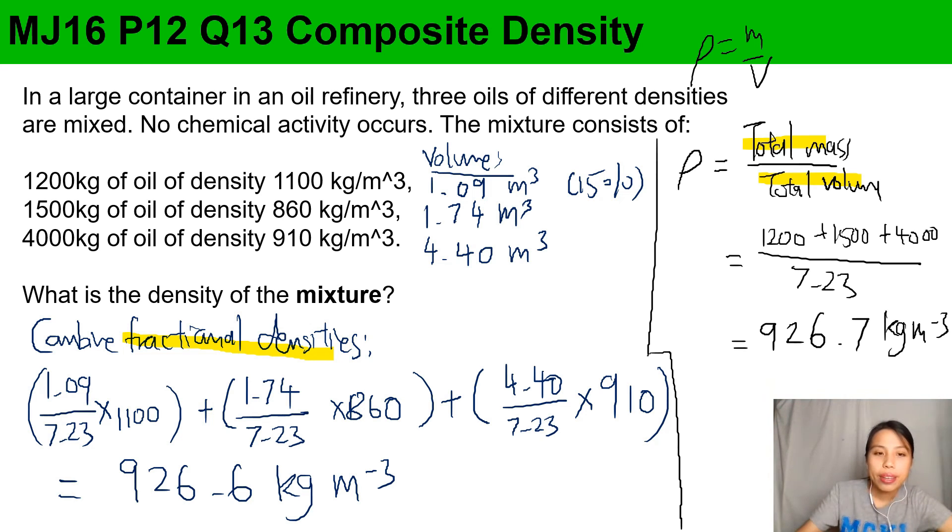Just a quick note: the first one is about 15 percent. The second one, 1.74 over 7.23 - that's about 24 percent. The last one, oh I bet got a lot, a big contribution - 4.4 over 7.23 times 100, that is 60 percent. So 60.9 percent is this oil number three contribution. So if you see percentages, you could use the fractional density method and combine densities, or you could use the other one but you need to find total mass and things like that. That's this composite density kind of question.